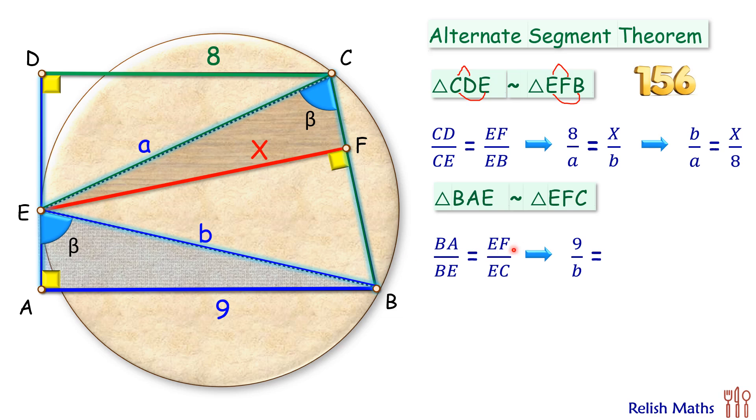So 9 upon b equals EF that's x and EC is a. Again cross multiplying we get x upon 9 is b upon a.